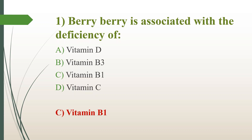Let's go through other options. Option A, vitamin D — its deficiency causes rickets in children, where bones become soft and bent. Option B, vitamin B3 — also called niacin — its deficiency leads to pellagra. Option D, vitamin C — also called ascorbic acid — its deficiency causes scurvy.